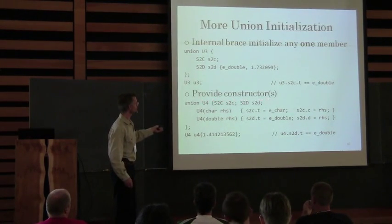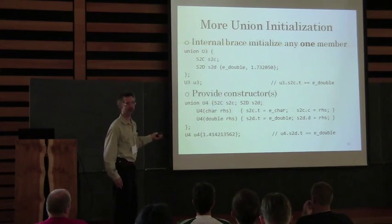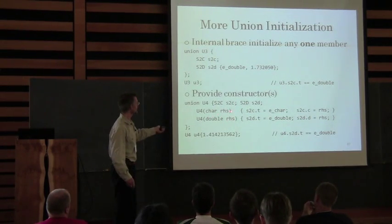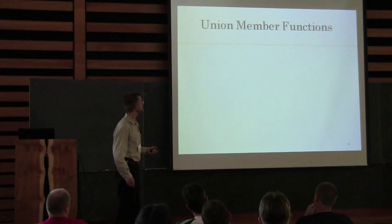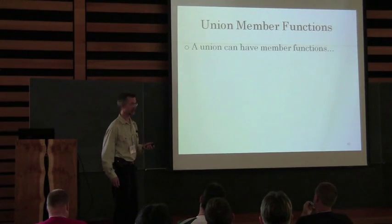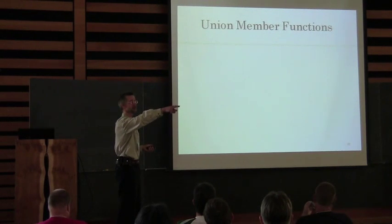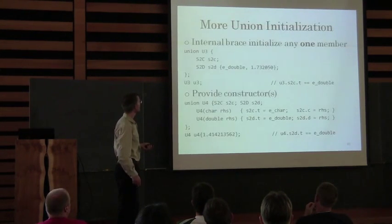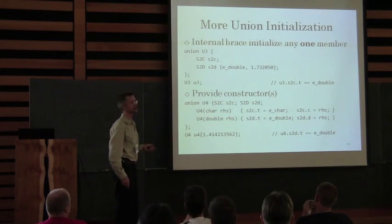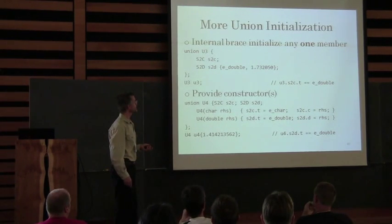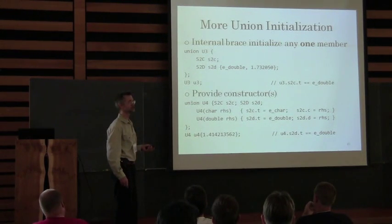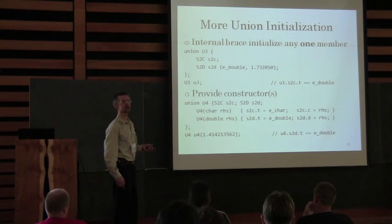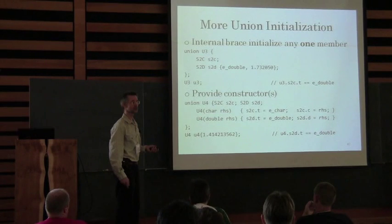If you provide constructors for your union, you can now give a union a constructor. In C++98, you cannot put into a union an object with a non-trivial constructor, non-trivial copy assignment, or non-trivial destructor. Non-trivial just means you provided one. Also not allowed: an object with any virtual member, or an array of any of these, or a static data member, reference type, or virtual member function.